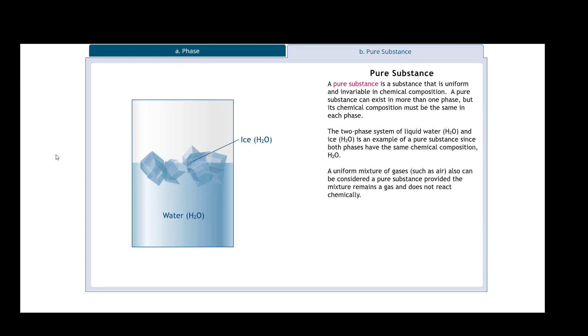When you talk about a pure substance, a pure substance is a substance that is uniform and invariable in chemical composition. The pure substance can exist in more than one phase, but its chemical composition must be the same at each phase. In a two-phase system, liquid water H2O and ice H2O is an example of a pure substance since both have the exact chemical composition H2O.